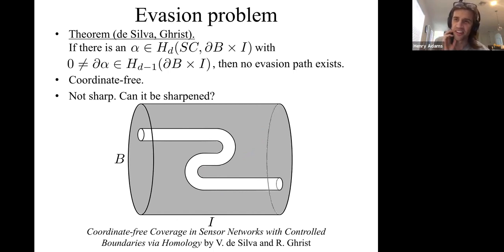But also there's no evasion path because any intruder has to move forward in time. The intruder has to keep going forward in time here and then eventually get caught. The intruder can't start going backwards in time. You can't press rewind on time and move backwards as you would need to do as an intruder to follow this S-shaped curve.